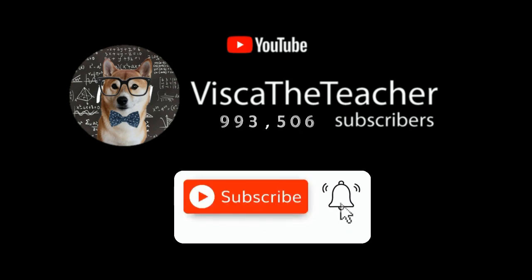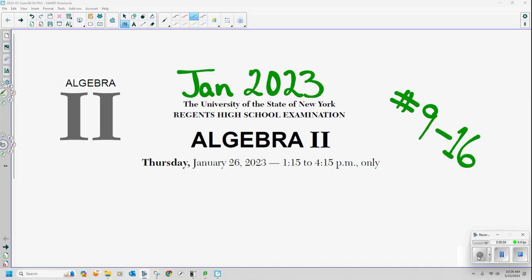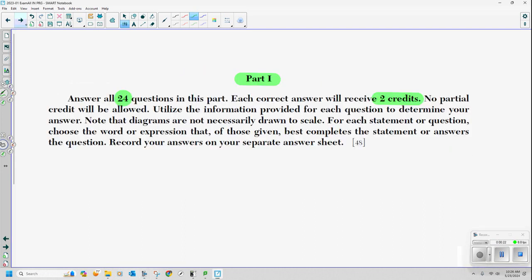Don't forget to subscribe and ring that bell. Hey, hey, welcome back. If you were with us for questions 1 through 8, thanks for coming back. If you weren't, that's all right. You aced 1 through 8 anyways. Here are questions 9 through 16 for the January 2023 Algebra 2 exam. These are multiple choice questions. There are a total of 24. There are two credits each, two points each. No partial credit. You don't got to show any work. You just got to record which option is your answer.